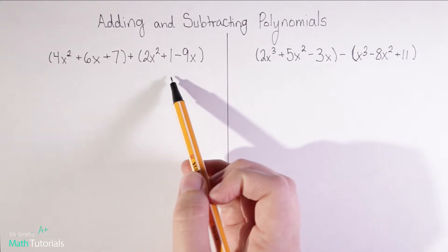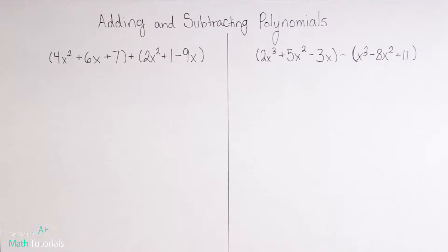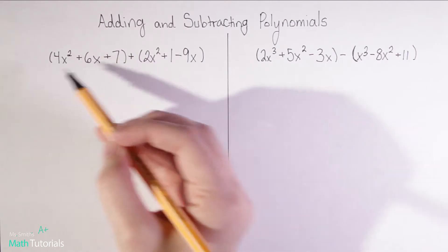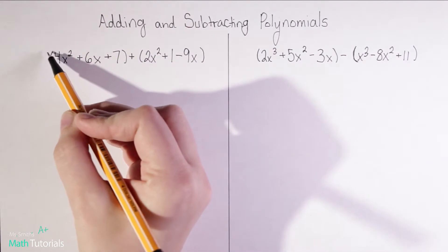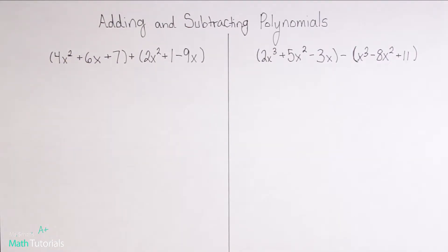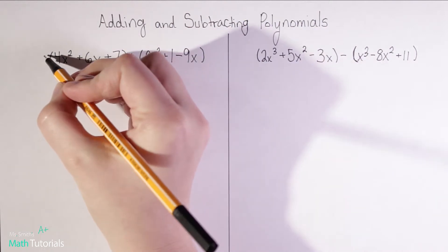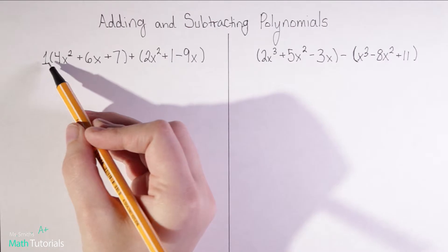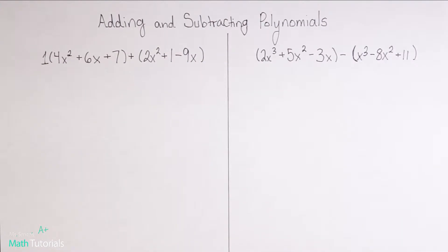In this video we're going to look at an example of adding polynomials and then a second example of subtracting polynomials. The first step is to understand that anytime we have a set of parentheses, whatever is right outside is being multiplied by what's in the parentheses. So if there's nothing there, there's an understood one.